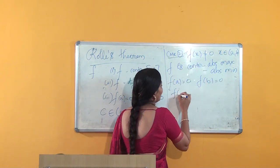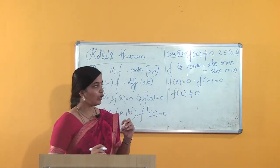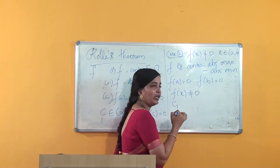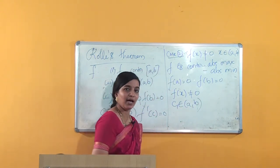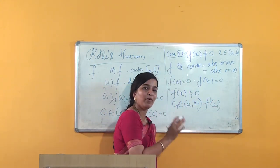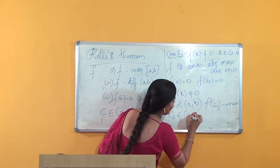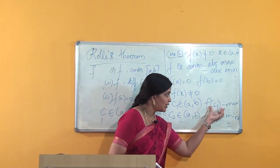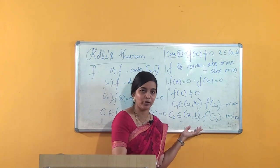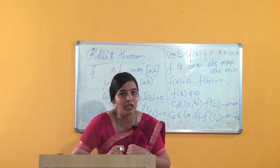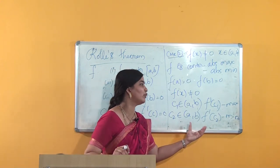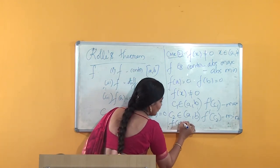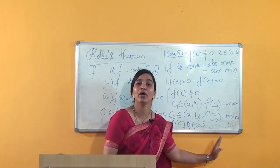We know that the third condition states f(a) = 0 and f(b) = 0, but we have assumed that f(x) is not equal to 0 for some value of x. The function has an absolute maximum and absolute minimum value, and it is also differentiable. I take a point c1 in the open interval (a, b) having the absolute maximum value, and a point c2 having the absolute minimum value. Since it has both an absolute maximum and minimum, we can say it has an absolute extremum value.